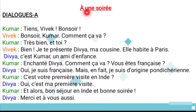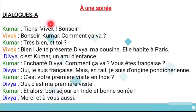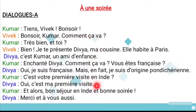Let us recall our lesson dialogue. The first lesson name is 'Une soirée,' which means 'In an evening party.' Dialogue A is a conversation between Kumar, Vivek, and Divya. They are introducing themselves at the evening party. Let's see the conversation again.